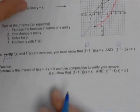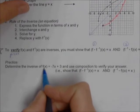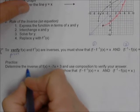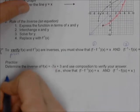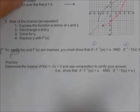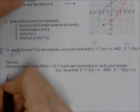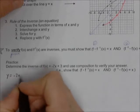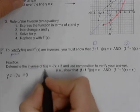Let's look at this particular function: f of x equals negative 7x plus 3. First, we're asked to determine the inverse of it. We can write that as y equals negative 7x plus 3 — that's the original function f of x.